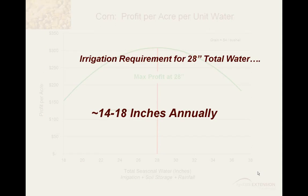In the Texas North Plains, the irrigation requirement to maximize profit on grain corn is typically between 14 to 18 inches annually. It cannot be overstated that irrigation management and application timing are very critical when targeting these specific irrigation levels.